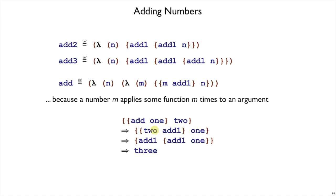And if 2 does what it's supposed to, then it adds 1 to add1 of 1. And if we add 1 to 1, we get 2. And if we add 1 to 2, we get 3. So that's an illustration, a test case that demonstrates how add works on two numbers.